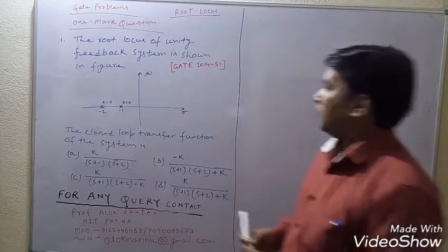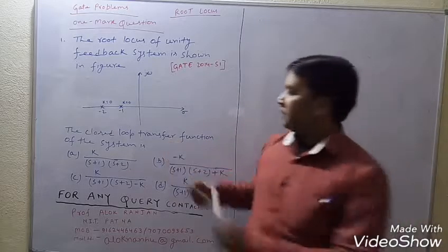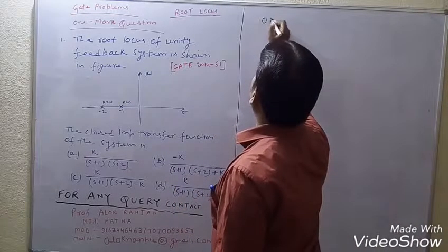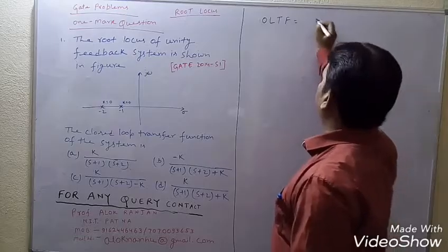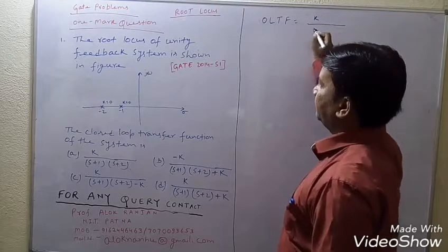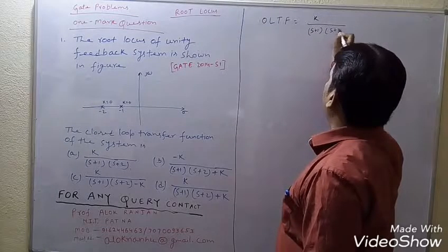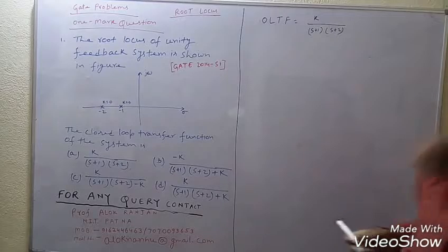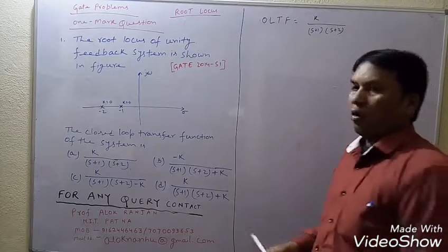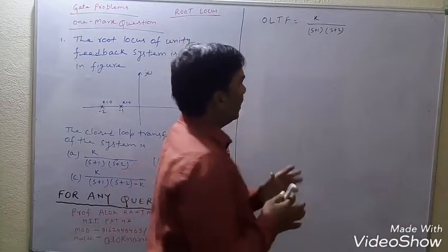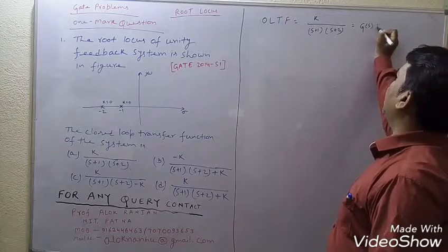So what will be the open loop transfer function (OLTF) for this system? The OLTF for this particular system will be K divided by (s+1) multiplied by (s+2). There is no zero, that's why I have not taken anything in the numerator. Now, OLTF is nothing but G(s) multiplied by H(s).